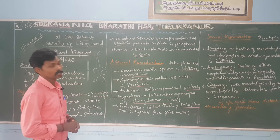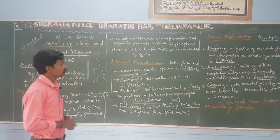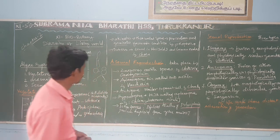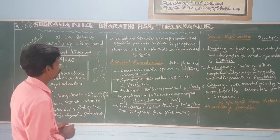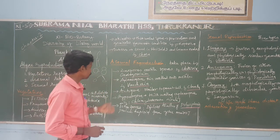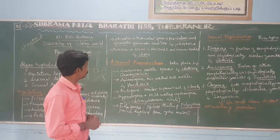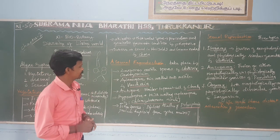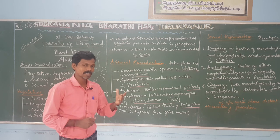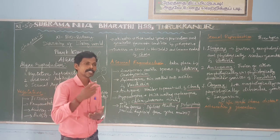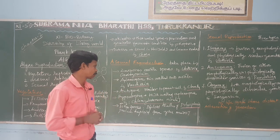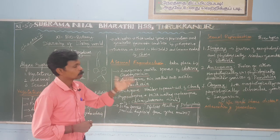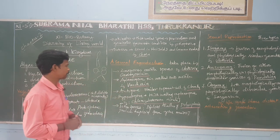Next: aplanospores — thin-walled, non-motile spores. Example: Vaucheria. Next: autospores — similar to parent cells. Example: Chlorella.